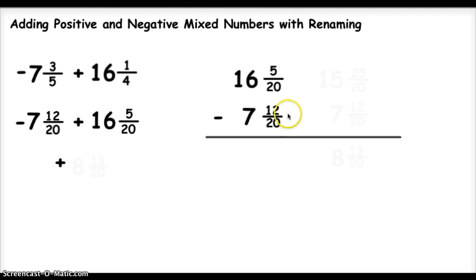Now the problem I have is I can't take 12 20ths away from 5 20ths, so I have to rename the 16 and 5 20ths. The way I do that is I borrow from my wholes. I have 16 wholes to begin with, and I have to borrow one of my whole numbers.